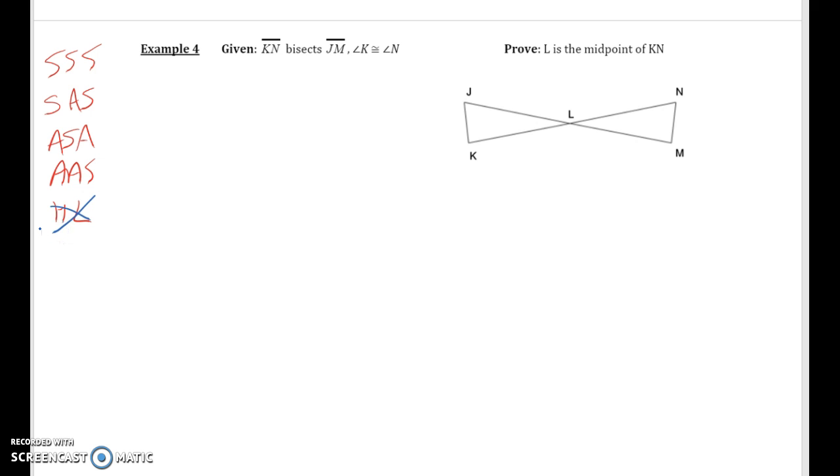Notice that what they asked us to prove is that L is the midpoint of KN. So chances are this is a CPCTC proof. To use CPCTC we have to prove the triangles are congruent and then use that to prove some other kind of relationship. I'm going to get my two columns set up.